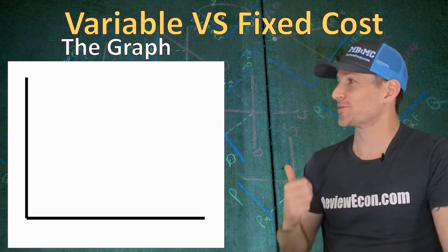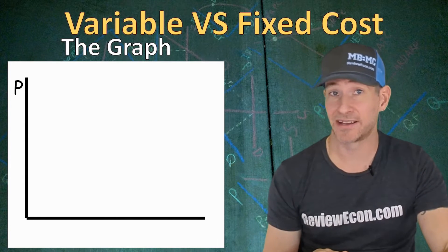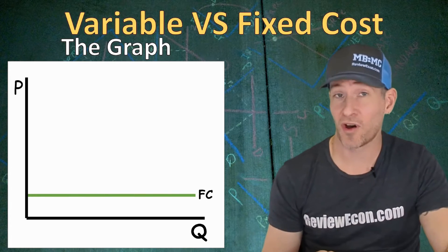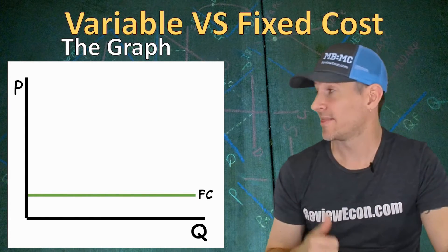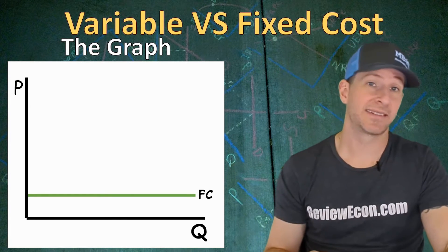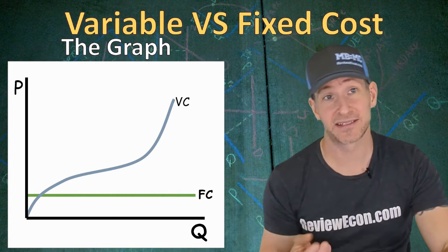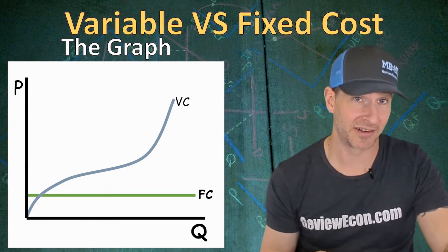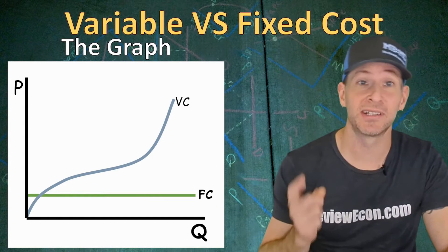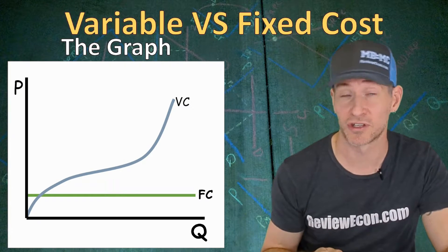Since this is microeconomics, of course we're going to have a graph. We have price on the y-axis and quantity on the x-axis. Our fixed costs with all units of output are going to be constant, which means we have a horizontal line for that fixed cost curve. The variable costs, on the other hand, tend to have a shape where they increase at an increasing rate, then increase at a decreasing rate, and eventually increase at an increasing rate once again. That's because the marginal cost of production decreases because of specialization, and then eventually increases because of diminishing marginal returns.